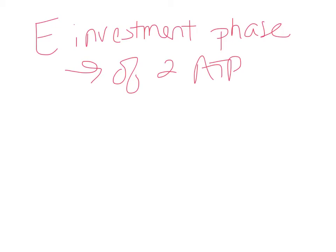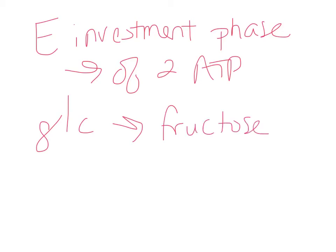Coenzyme A can now attach to that two-carbon fragment, producing acetyl-CoA — the whole big molecule. Acetyl-CoA is what can go into the Krebs cycle and finish oxidative phosphorylation, or aerobic respiration. We'll stop here, do some work in class, and then continue with the rest of aerobic respiration in the next video.